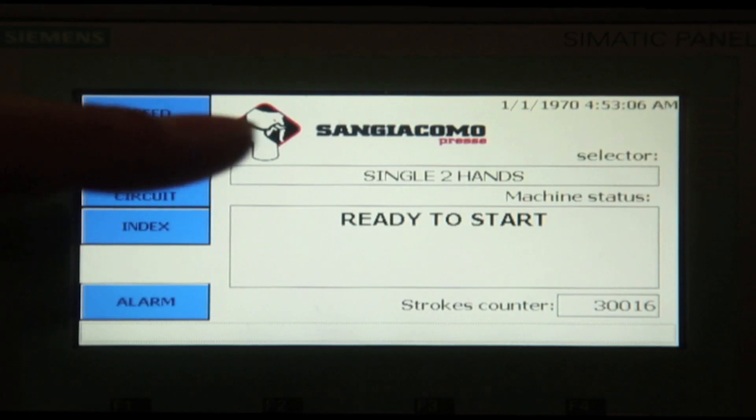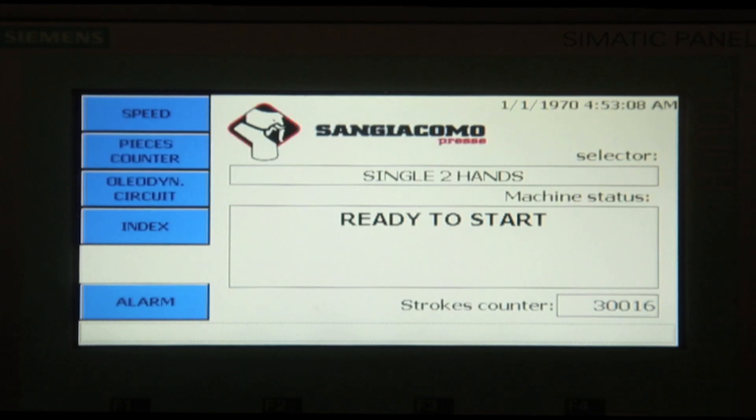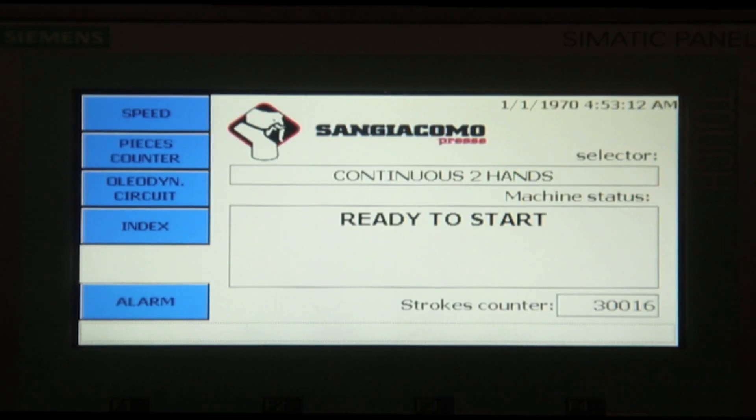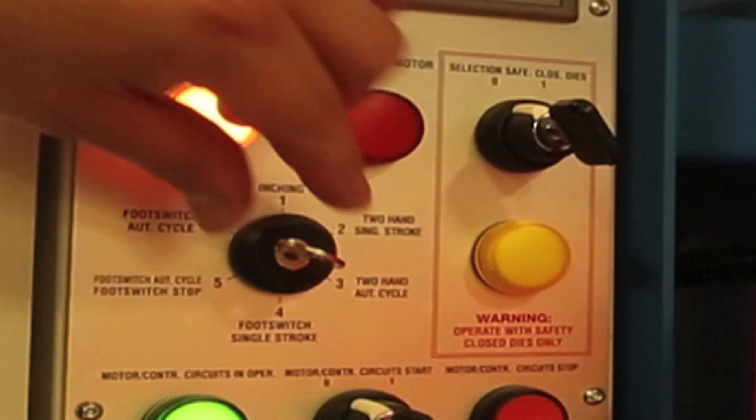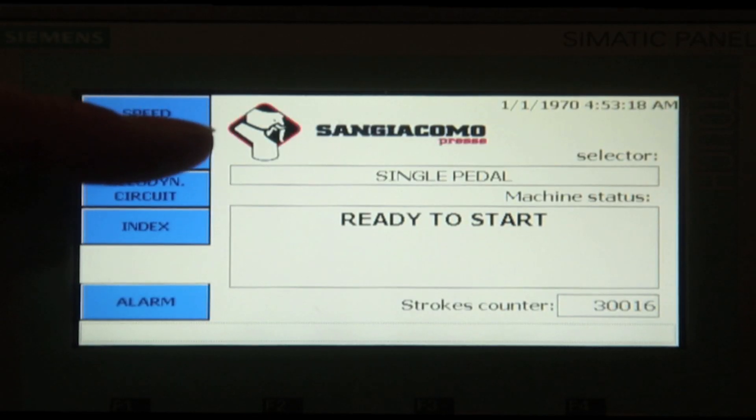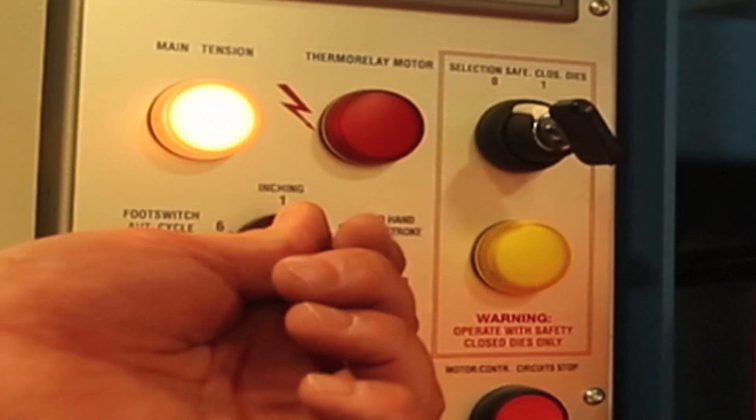The next one is a single cycle with two hand operation. Then we have a continuous cycle operation for two hands. There is a single cycle with a foot pedal operation.